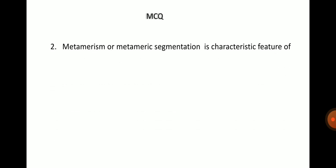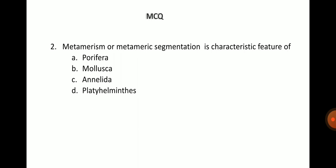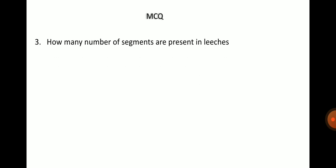Second question: Metamerism or metameric segmentation is a characteristic feature of — Porifera, Mollusca, Annelida, or Platyhelminthes? The answer is option C, that is Annelida. Third question: How many segments are present in leeches? The answer options are 32, 33, 34 and 45. The correct answer is option C — the body of leeches has 34 segments.